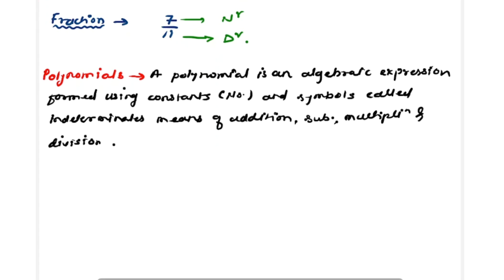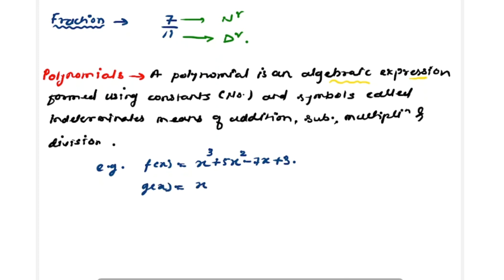So a polynomial is basically an algebraic expression consisting of constants and some symbols combined using addition, subtraction, multiplication, and division. For example, f(x) = x³ + 5x² − 7x + 3 is a polynomial. Another example: g(x) = x⁴ − 5x + 7 is also a polynomial.